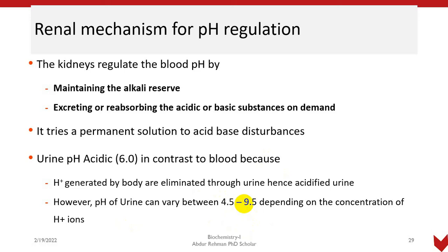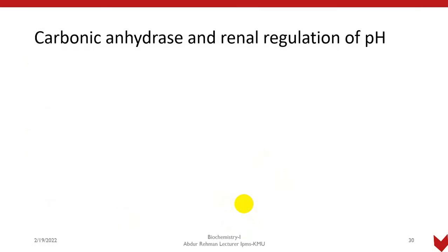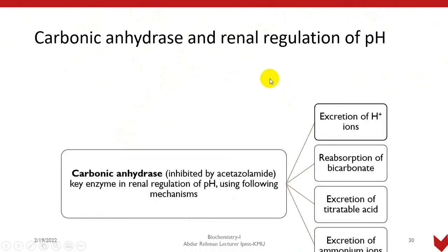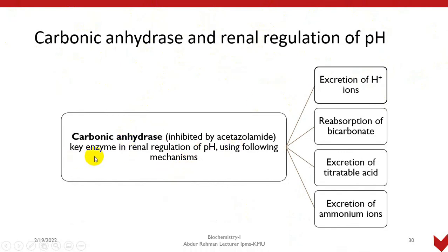If we consume a very high vegetarian diet, in that case the pH can shift toward alkaline. Now there is one key enzyme: carbonic anhydrase. We have studied it many times before. It is the main enzyme that regulates pH through the kidney. Carbonic anhydrase is the key enzyme in renal regulation of pH.